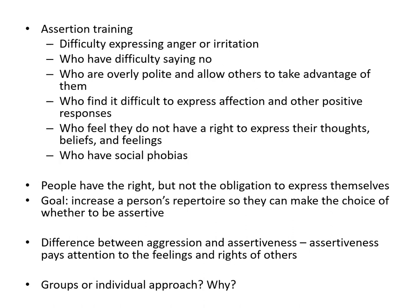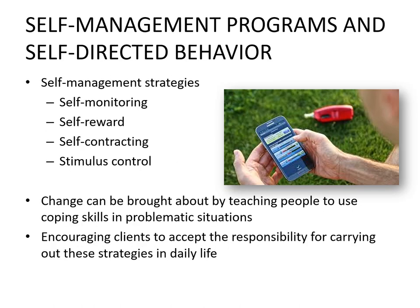Social skills training works in both individual and group therapy. Group is wonderful because the person can try different ways of interacting with many different people. Self-management programs and self-directed behavior involve self-monitoring, self-reward (rewarding yourself when you reach a specific goal — maybe treating yourself to Disneyland), self-contracting (making yourself a treatment plan), and stimulus control (understanding what's going on around you). Change can be brought about by teaching people coping skills in problematic situations and encouraging clients to accept responsibility for carrying out these strategies in daily life — applying them in the real world, not just in counseling sessions.